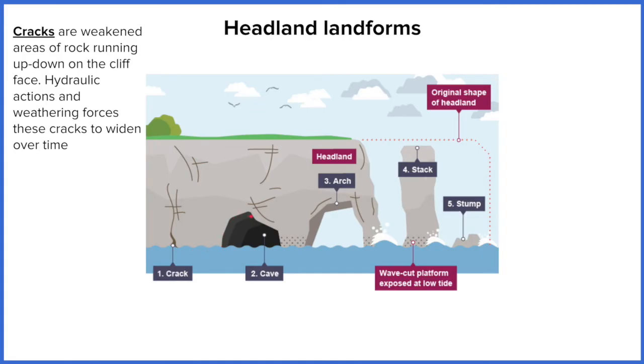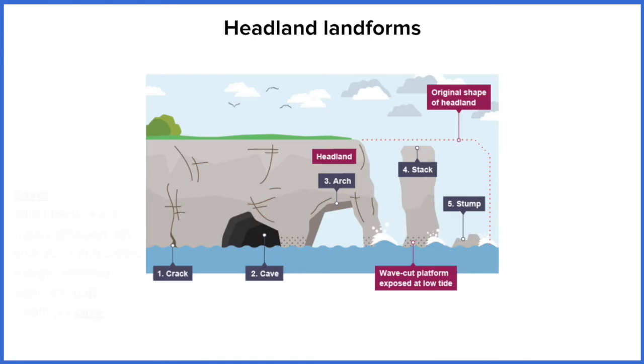So what you end up having is a really wide entrance that also starts to go further deeper into the headland, and this is called a cave. So it doesn't go all the way through into the other side of the headland, it just goes in.